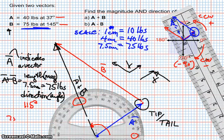So, the answer is 75 pounds at 115 degrees. That would be the sum of A plus B.